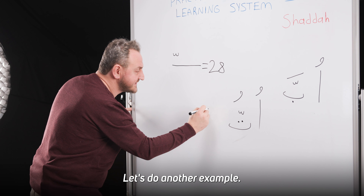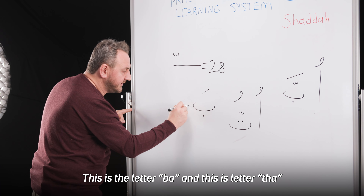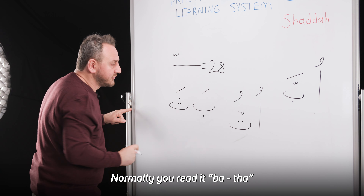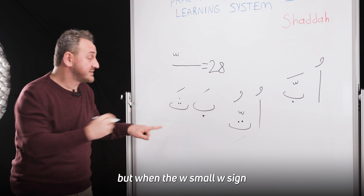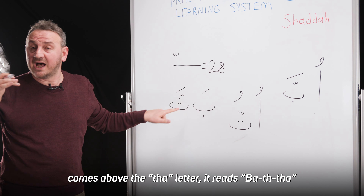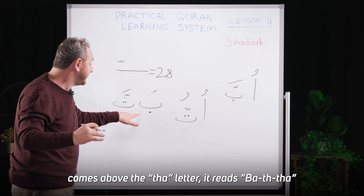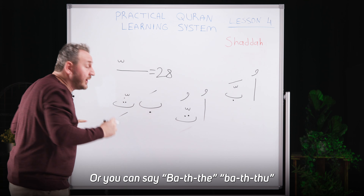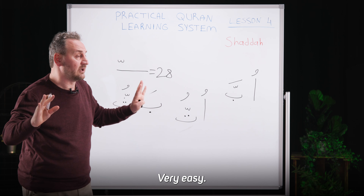Let's do another example. This is the letter B and this is letter T. Normally, you read it B-T. But when the small W sign comes above the T letter, it reads B-T, or you can say B-T-T. Very easy.